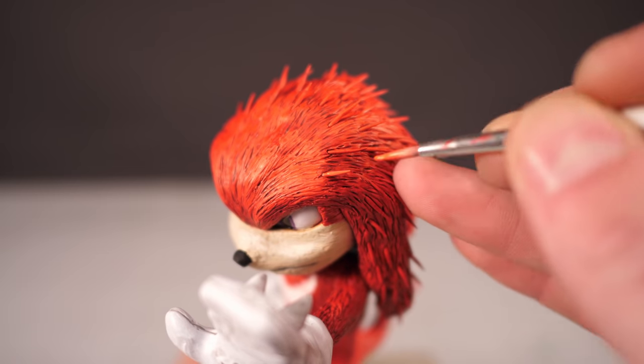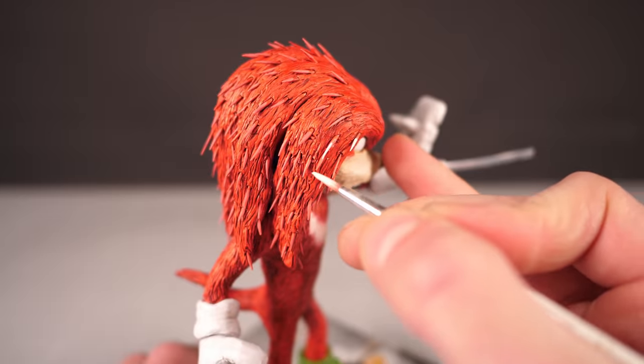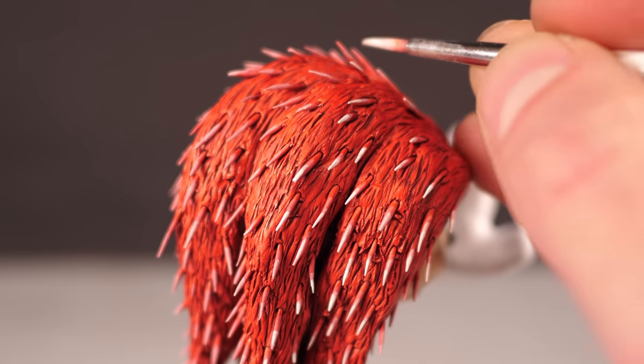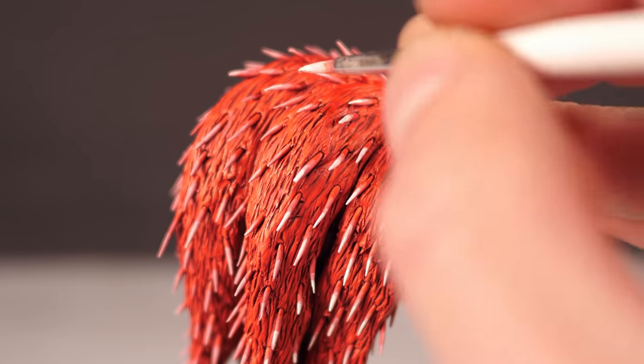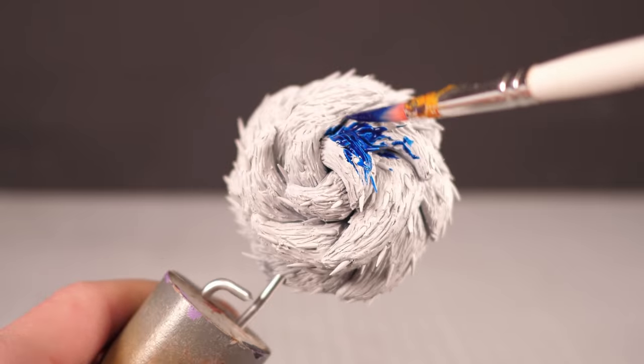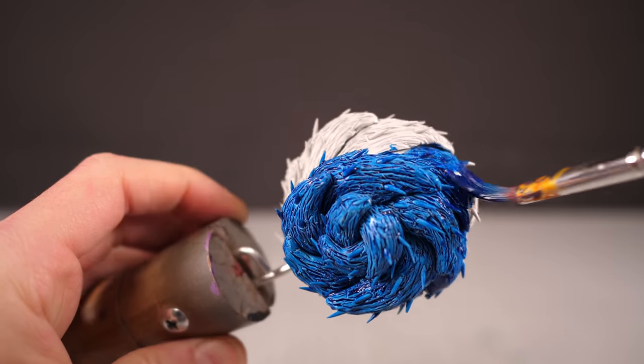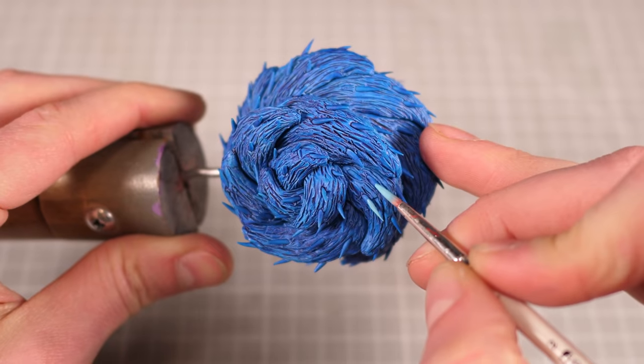Now I was trying to figure out how best to make his quills look glowy, so I opted for a red to white transition towards the tips. And as you probably guessed, the Sonic ball gets painted blue and then the tips get the same transition but with a blue to white instead.